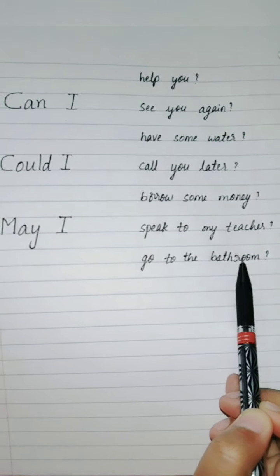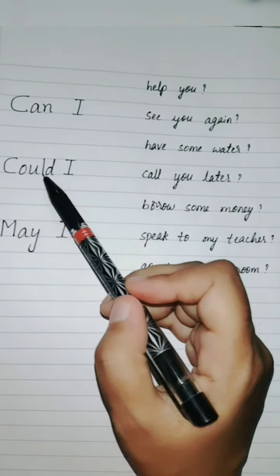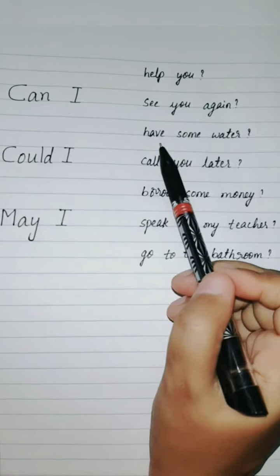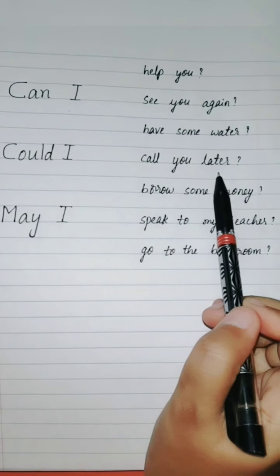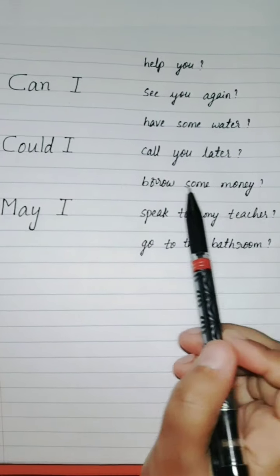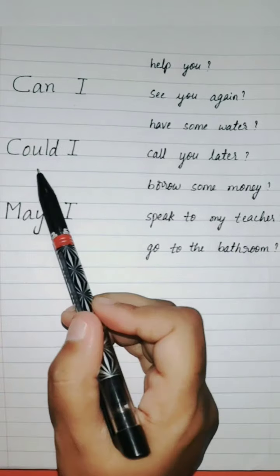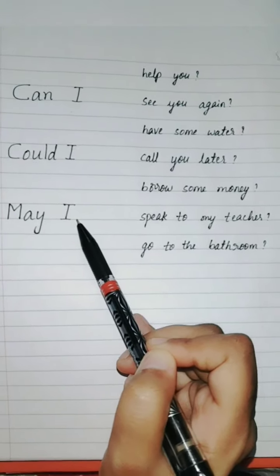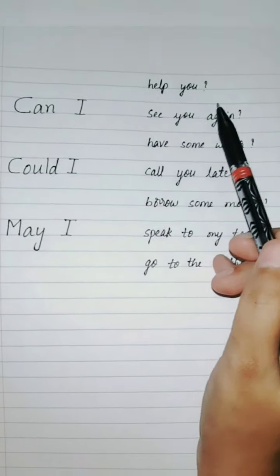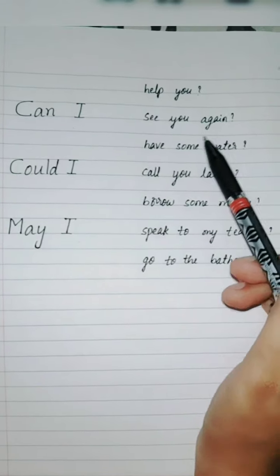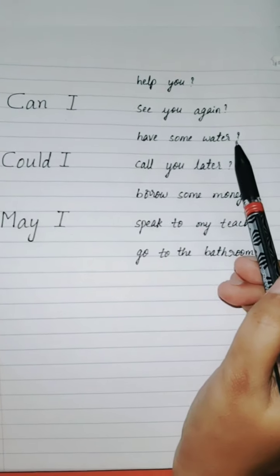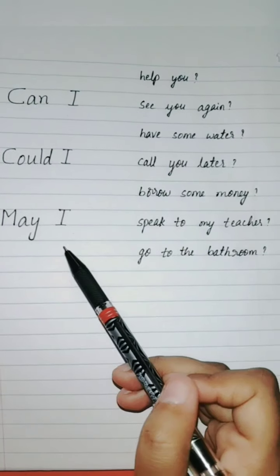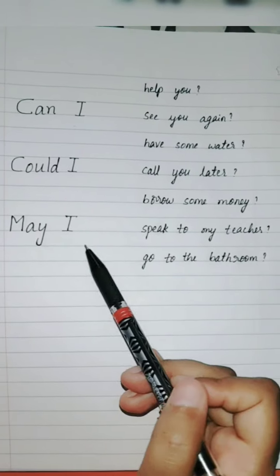Now using 'could I': Could I help you? Could I see you again? Could I have some water? Could I call you later? Could I borrow some money? Could I speak to my teacher? Could I go to the bathroom? And with 'may I' — which is more polite: May I help you? May I see you again? May I have some water? May I call you later? May I borrow some money? May I speak to my teacher? May I go to the bathroom?